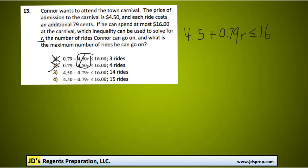The next thing we need to do is find out how many rides Connor can actually go on, and to figure that out we're going to solve this inequality. I'm going to start by subtracting 4.5 from both sides, canceling that out, and then we'd be left with 0.79r is less than or equal to 11.5.